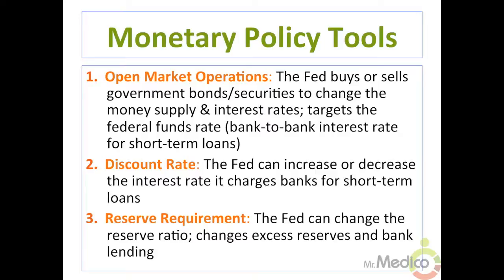The first major monetary policy tool is open market operations: when the Fed buys or sells government bonds or securities to change the money supply and interest rates. The Fed targets the federal funds rate — the bank-to-bank interest rate for short-term loans — through open market operations. If the Fed wants to increase money supply and reduce interest rates, it buys bonds. If it wants to reduce the money supply and increase interest rates, it sells bonds.